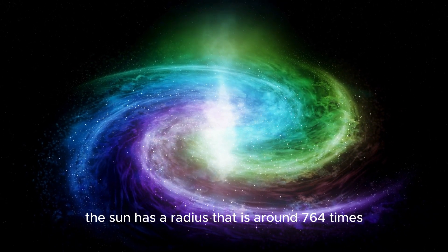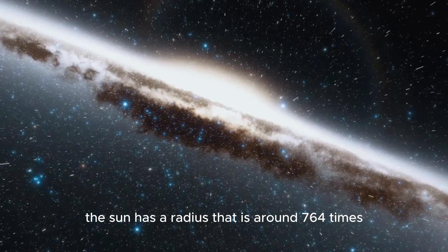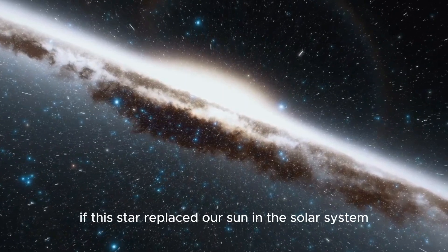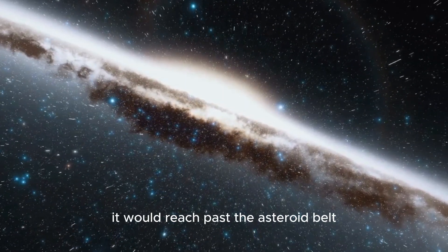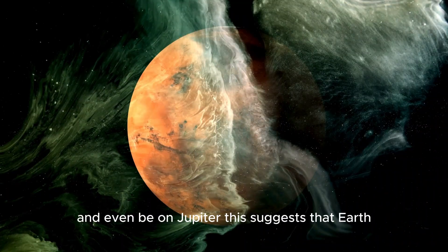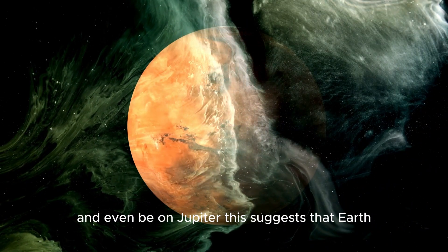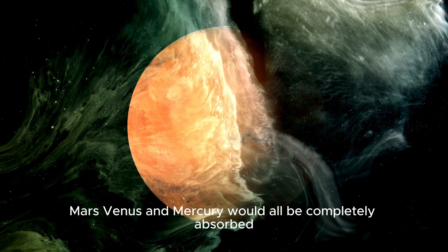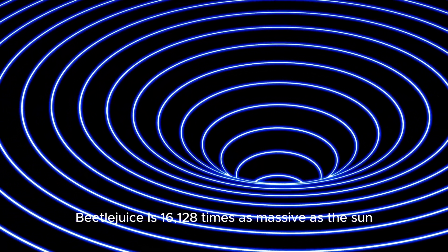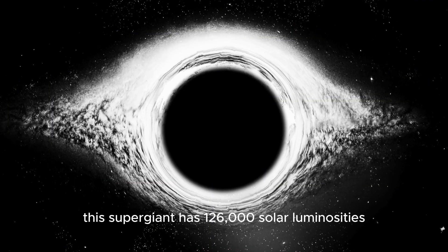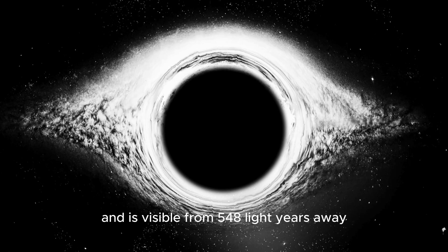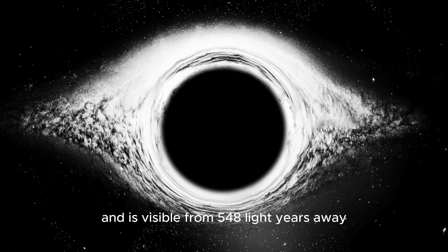The Sun has a radius that is around 764 times smaller than Betelgeuse. If this star replaced our Sun in the solar system, it would reach past the asteroid belt and even beyond Jupiter. This suggests that Earth, Mars, Venus, and Mercury would all be completely absorbed. Betelgeuse is 16,128 times as massive as the Sun, with 126,000 solar luminosities.